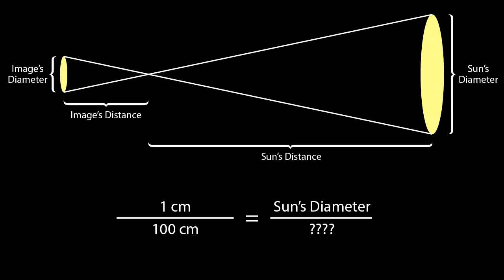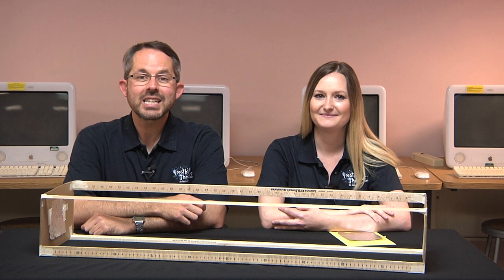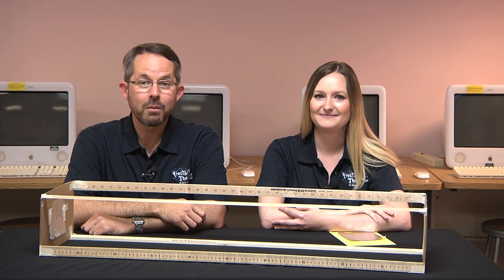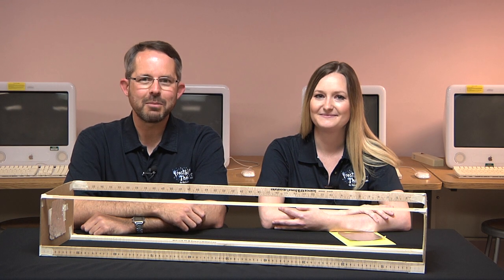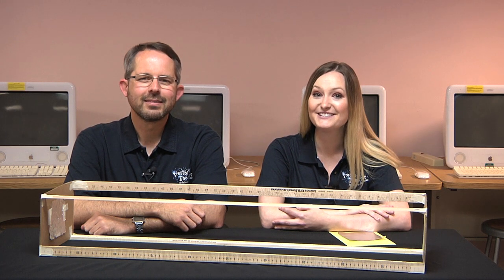Now that we know the distance to the sun, we find that its diameter is about 1.5 million kilometers, which is close to the accepted value of about 1.4 million kilometers. Thanks for watching. I hope you'll join us again soon for another experiment.